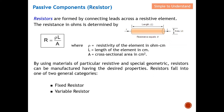Let's start by discussing resistance. Resistors are formed by connecting leads across a resistive element and are measured in ohms, governed by the equation R = ρL/A, where ρ is the resistivity of the element in ohm-centimeters, L is the length, and A is the cross-sectional area. For example, looking at this diagram of a resistor, L is the length and A is the cross-sectional area. By using materials of particular resistivity and special geometry, resistors can be manufactured with the desired resistance value.